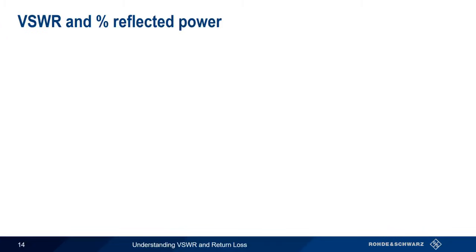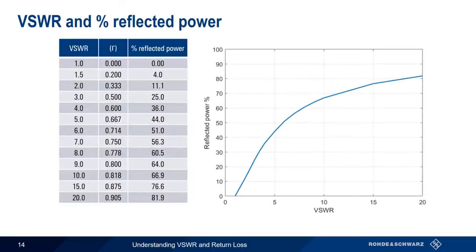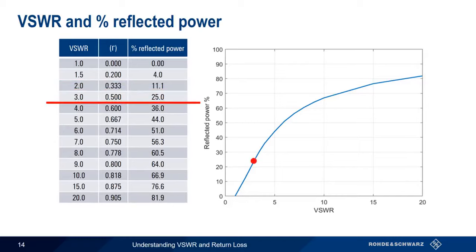Now let's look at what happens as VSWR increases. If the source and load impedances are matched, then VSWR is 1 and we have no reflected power — all power is absorbed by the load. At a VSWR of 1.5, only 4% of the total power is reflected. By the time we get to a VSWR of 3, a quarter of the forward power is reflected back to the source. This is still acceptable for many applications.